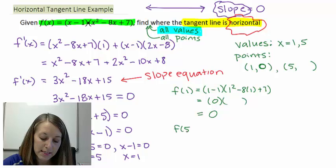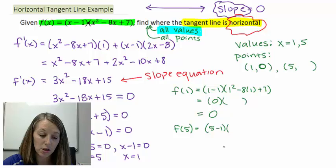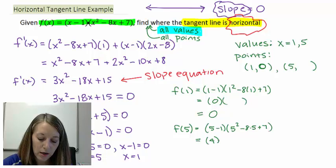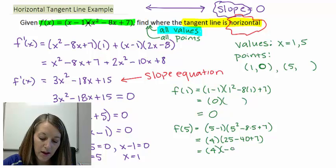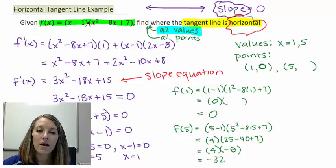If I do it again with my second point, 5 minus 1, plugging it into the original equation, 5 squared minus 8 times 5 plus 7. So it gives me 4 times 25 minus 40 plus 7, or 4 times negative 8, or that gives me negative 32. So there is my corresponding y value when the x value is equal to 5.